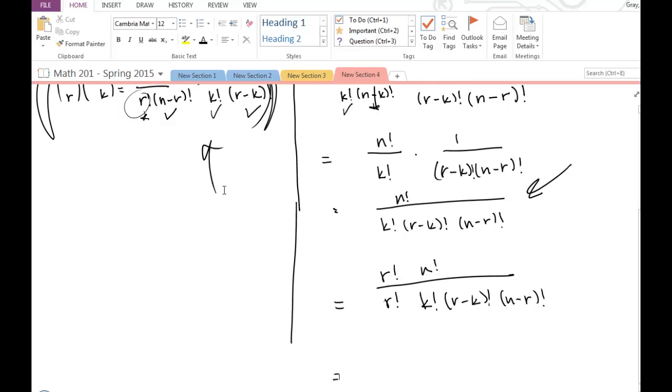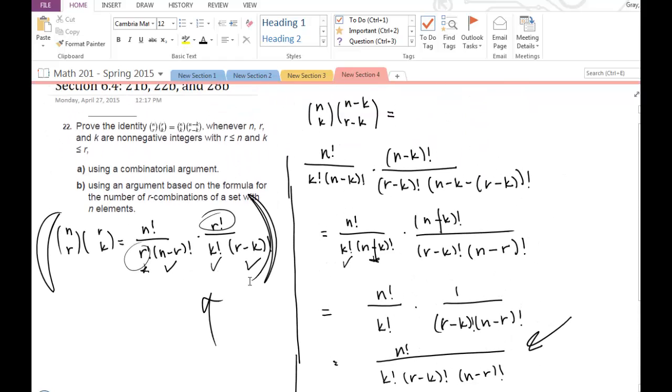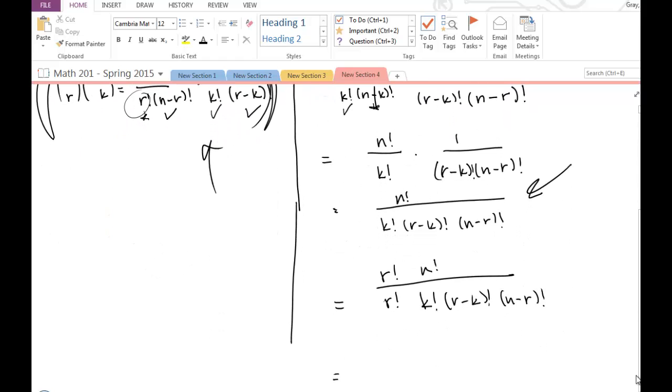So I can go ahead and multiply the denominators and the numerators in any order. So I'm just going to reorder these so that they're closer to this order. So instead of r factorial times n factorial, I'm going to write n factorial times r factorial. And then in the denominator, I'm going to rewrite this so I have r factorial times n minus r factorial times k factorial times r minus k factorial.